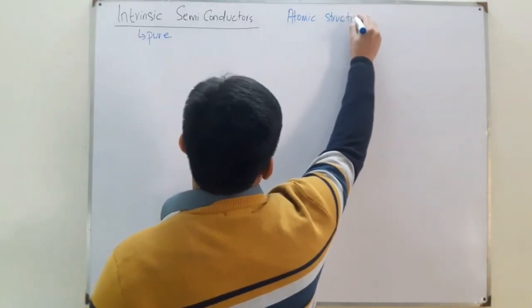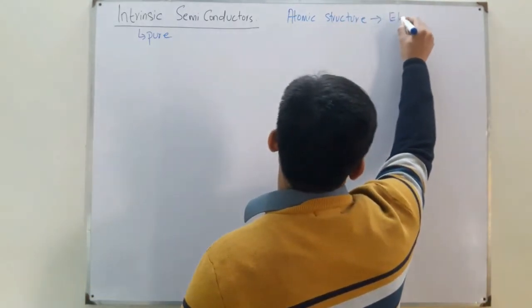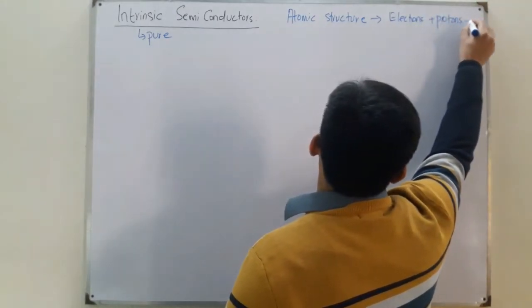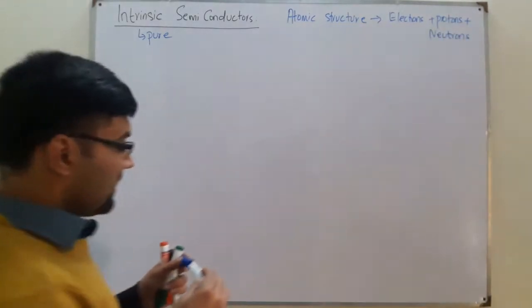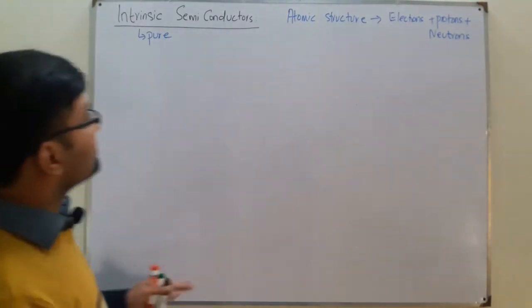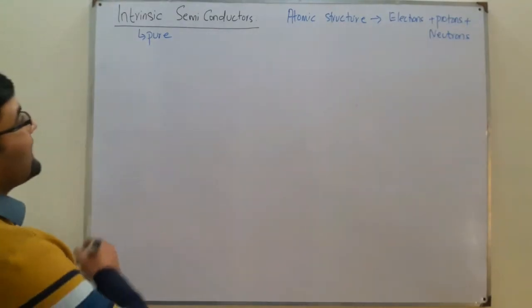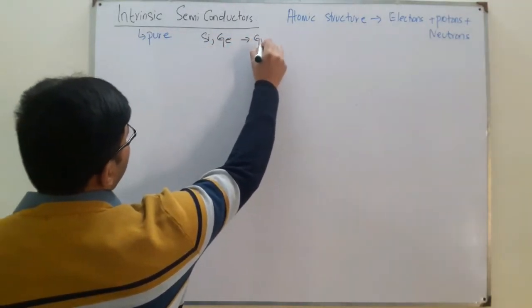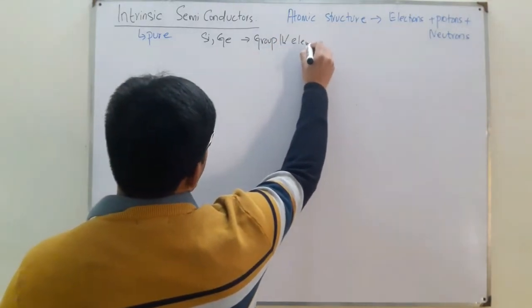You know that the structure of any atom consists of electrons, protons, and neutrons. Now, silicon and germanium are Group 4 elements of the periodic table.